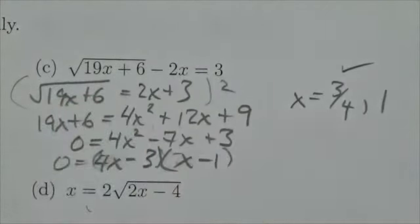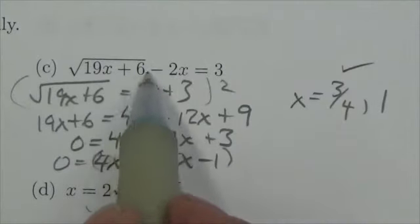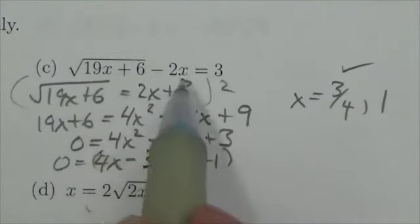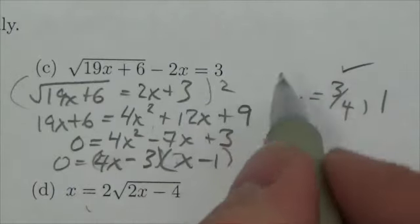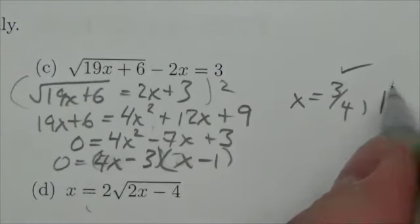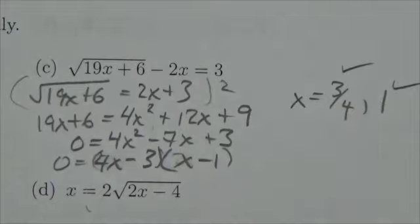So putting 1 into that, that's going to be, well, 19 plus 6 is 25. The square root of 25 is 5. Minus 2 times 1 is 3. So that does work. So both of those results work for this particular question.